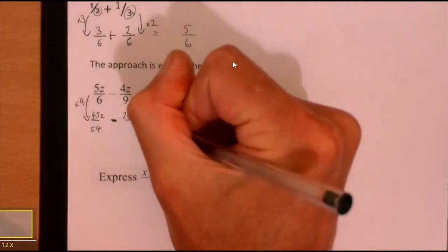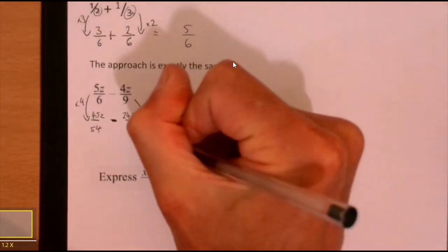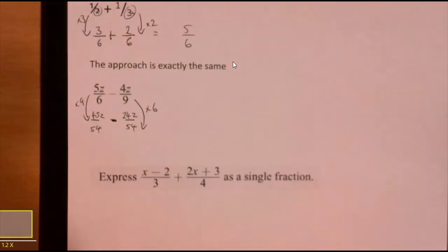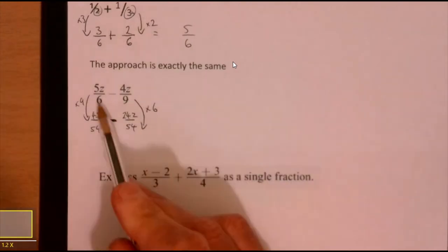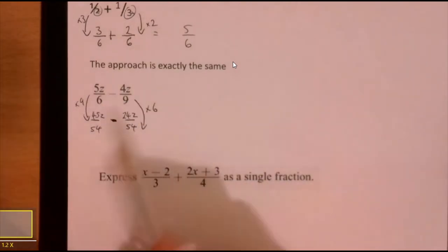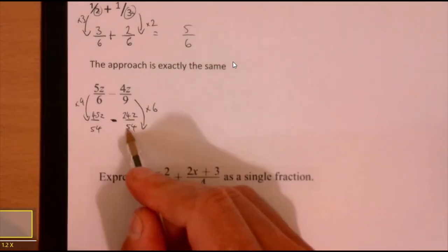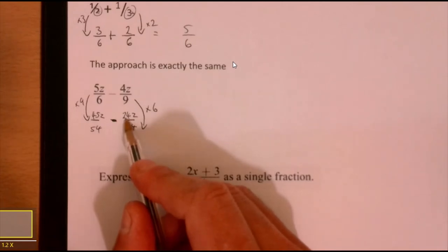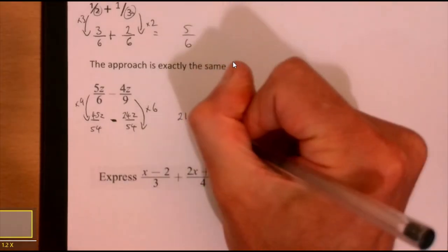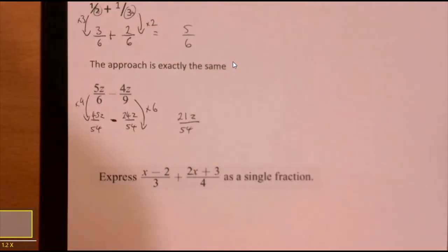So that gives me 45z over 54 and then that gives me 24z over 54. Now what you could have done is you could have multiplied this one by 3 and this one by 2, it would have made life a little bit easier, alright? But I'm just going to do it that way.